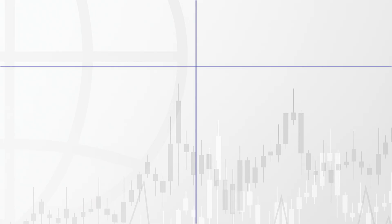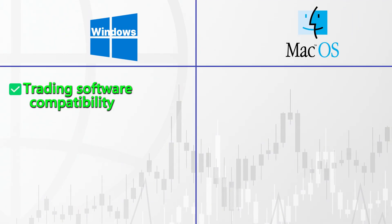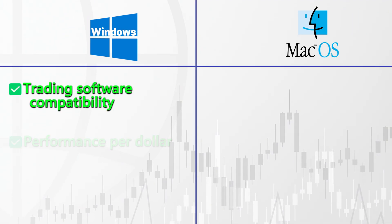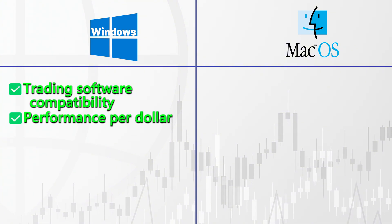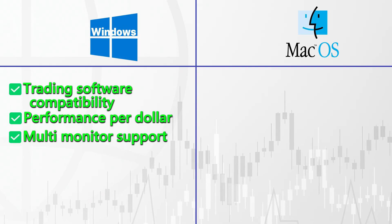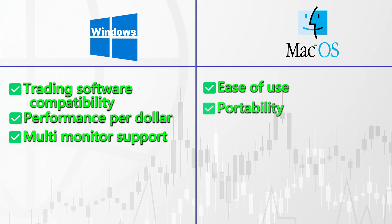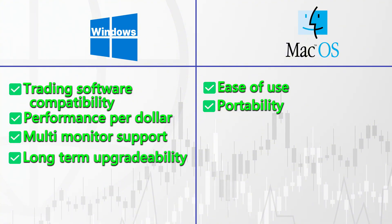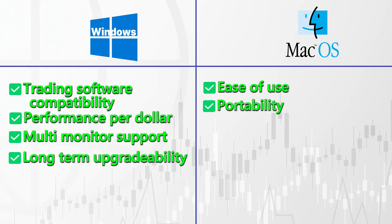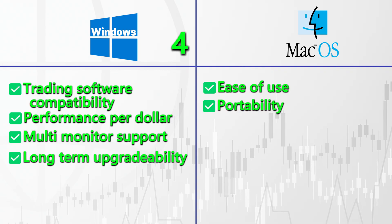All right, let's settle this with a trader's scorecard. Trading software compatibility? Windows wins. Performance per dollar? Windows wins again. Multi-monitor support? Windows. Ease of use? Mac. Portability? Mac. Long-term upgradability? Windows wins again. So the score? Windows 4, Mac 2. Game over.